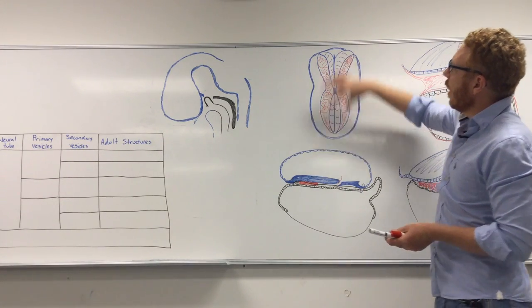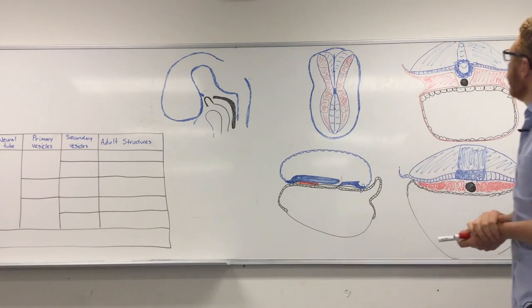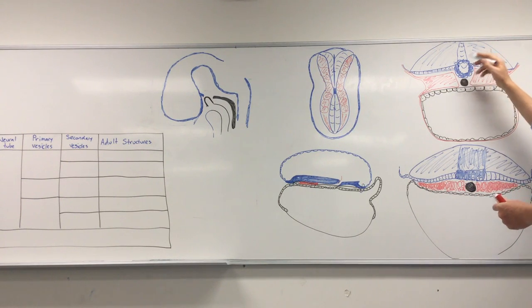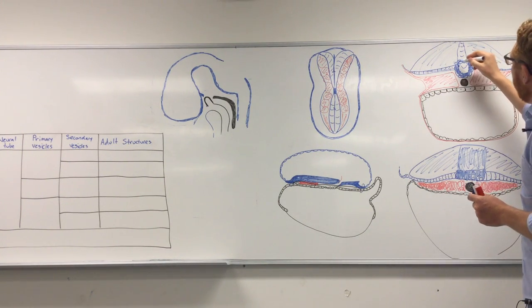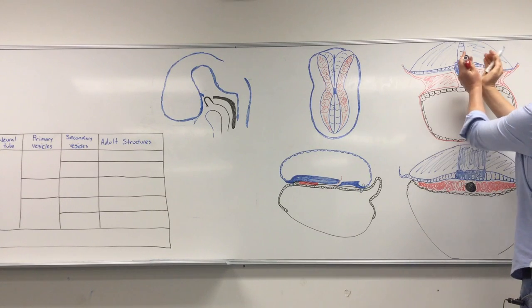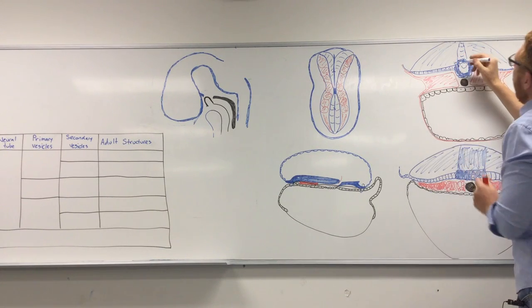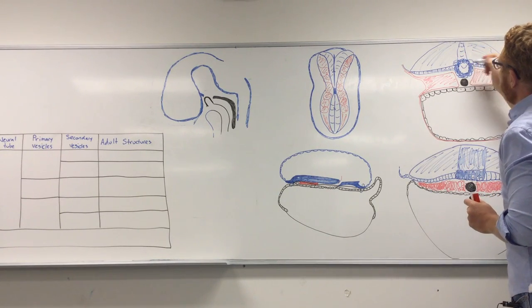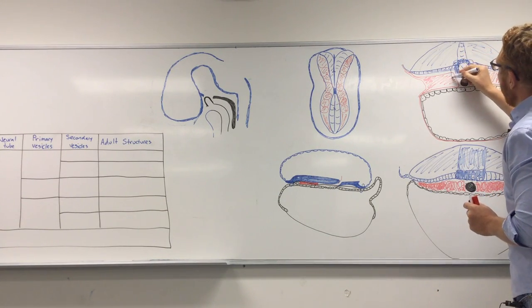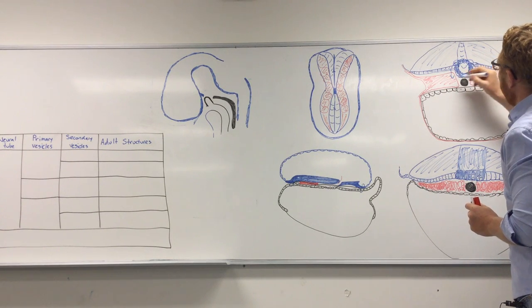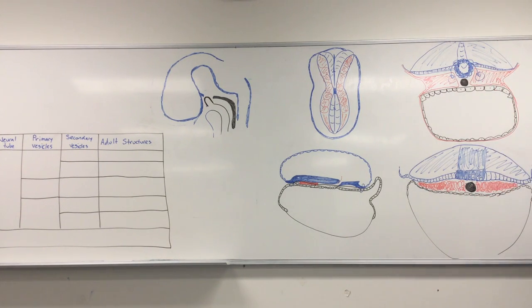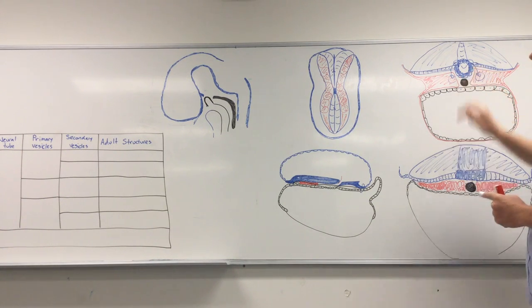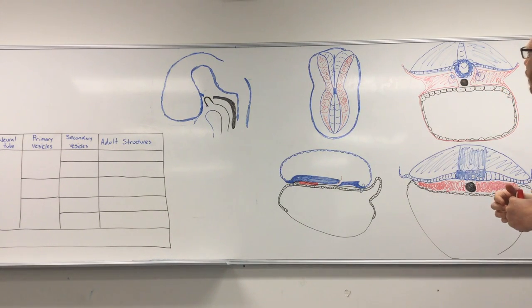Just before the tube closes, as it's starting to crest up, a group of cells just as it's closing will migrate on either side. These are called the neural crest cells, which we'll talk about more later.